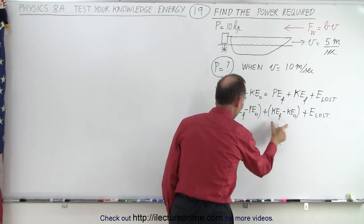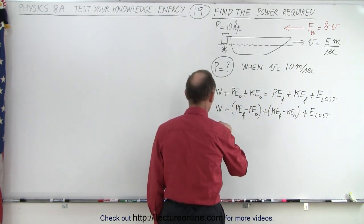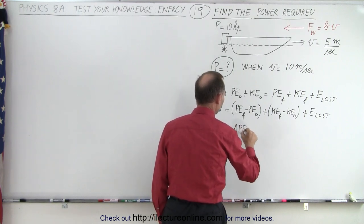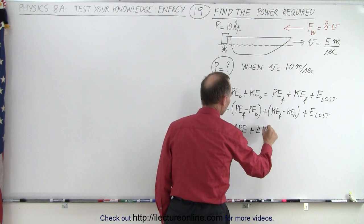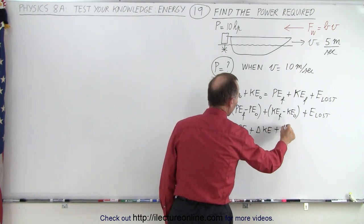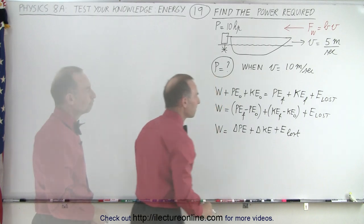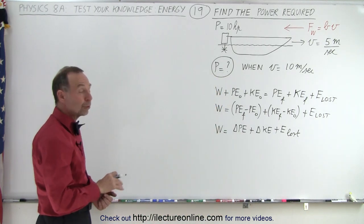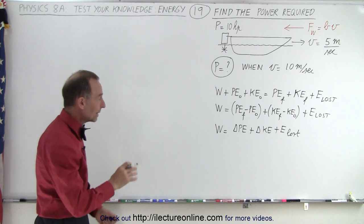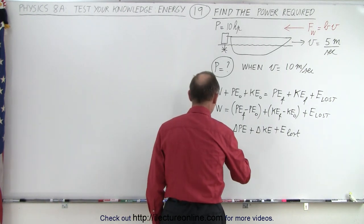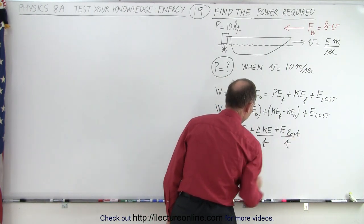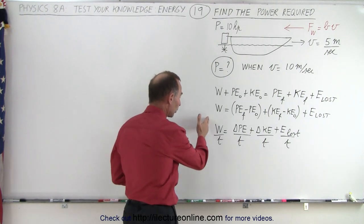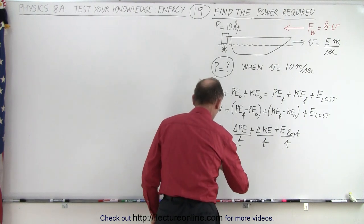So work equals the change in potential energy plus the change in kinetic energy plus the energy lost. Now we divide both sides by time. Work divided by time we know is equal to power — the power provided by the motor.